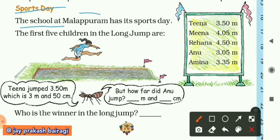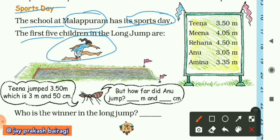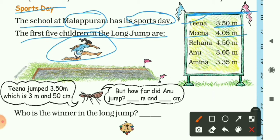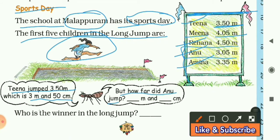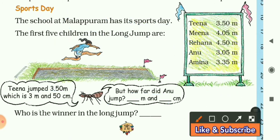The school at Malapuram has its sports day. Here we can see an event of a sports day — the first five children in the long jump. This is the table of long jump: Tina's score is 3.50 meter, Meena jumped 4.05 meter, and there are also Rihanna, Anu, and Amina. Tina jumped 3.50 meter, which means 3 meter and 50 centimeter. Anu's score is 3 meter and 5 centimeter, so 3.50 is greater than 3.05, meaning Tina has a better score.